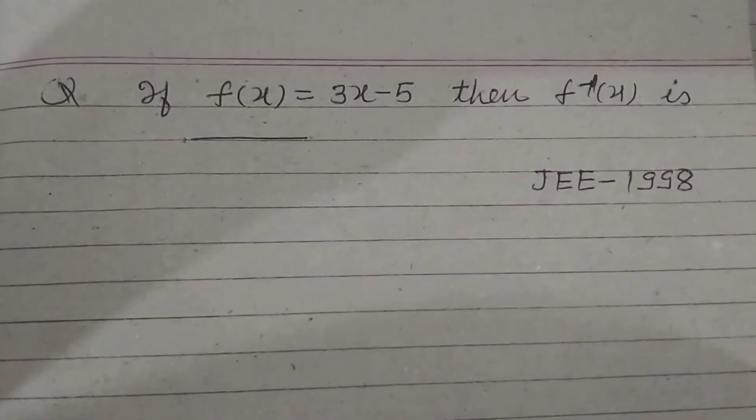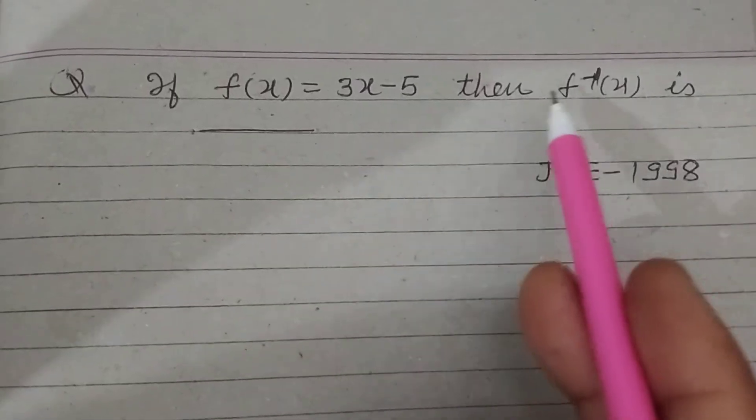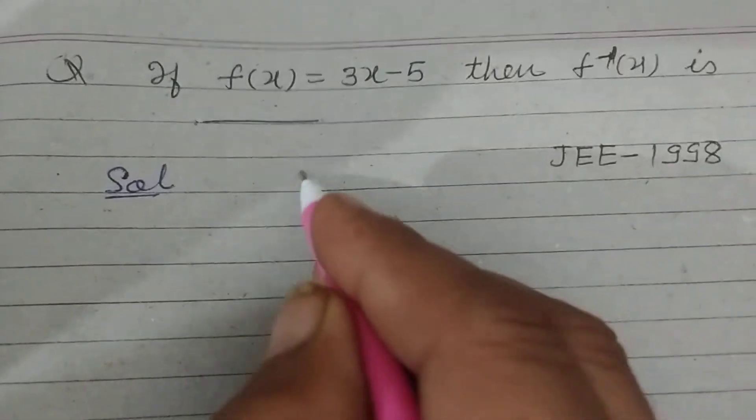Hello student, welcome to this YouTube channel. The question is: if f(x) equals 3x minus 5, then f inverse x is given by. So student, here the given function is f(x) equals 3x minus 5.